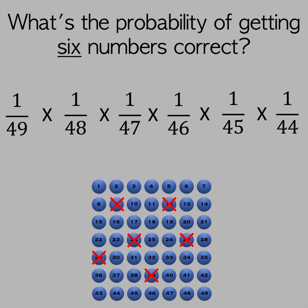With six numbers, the probability of guessing them in the correct order is calculated by multiplying together the probabilities of guessing each one in turn.